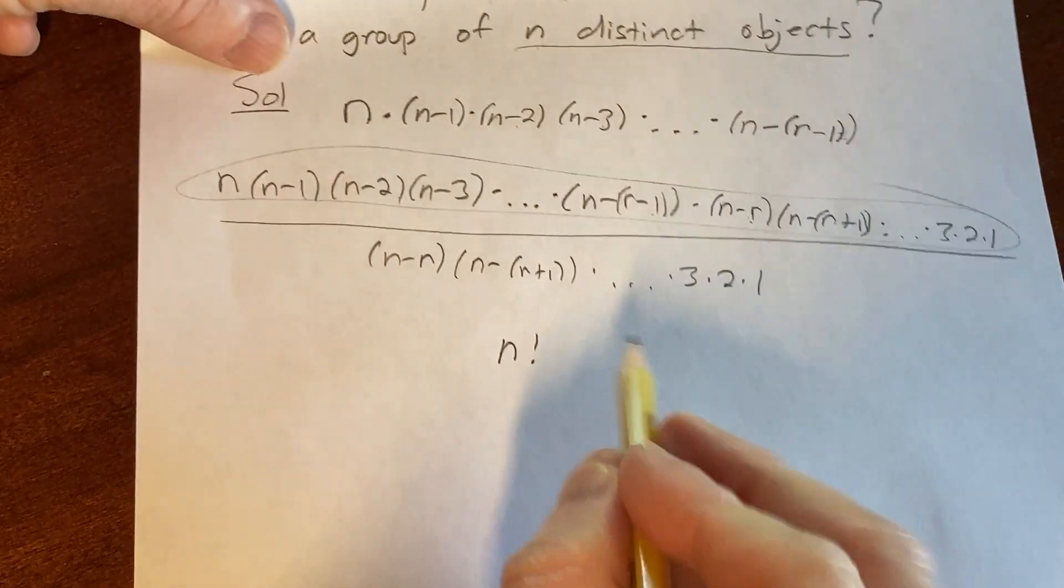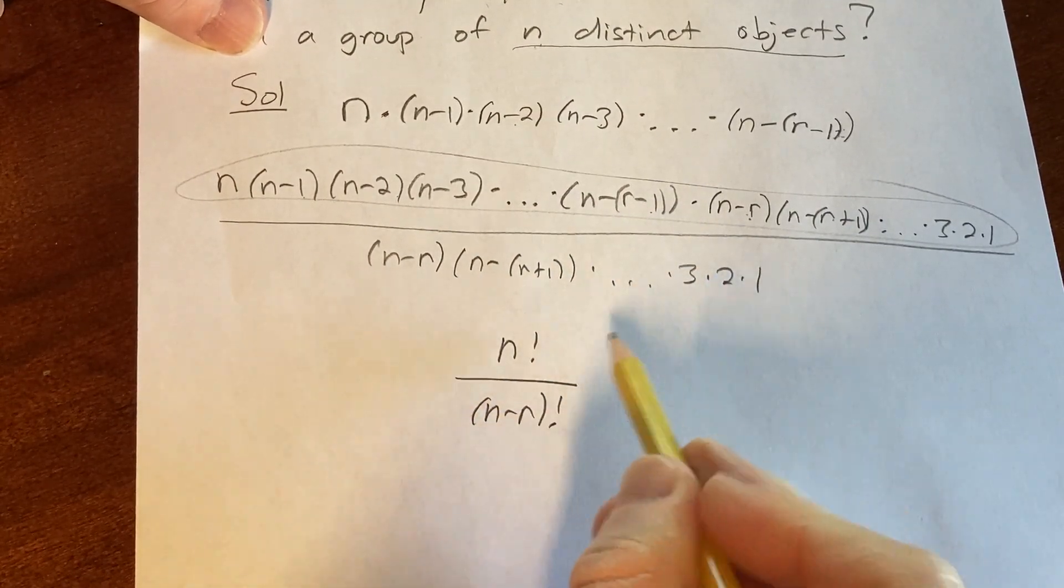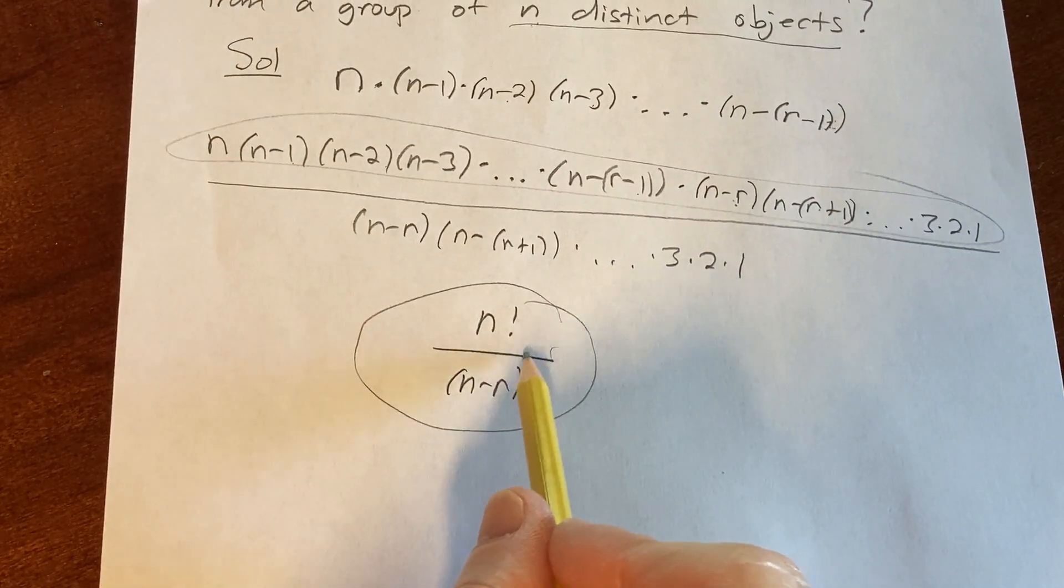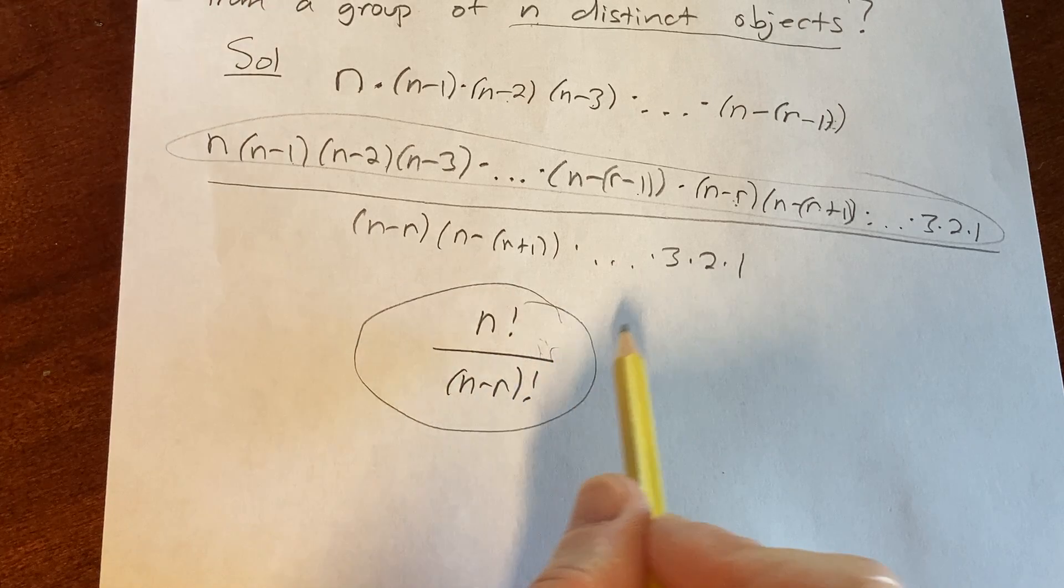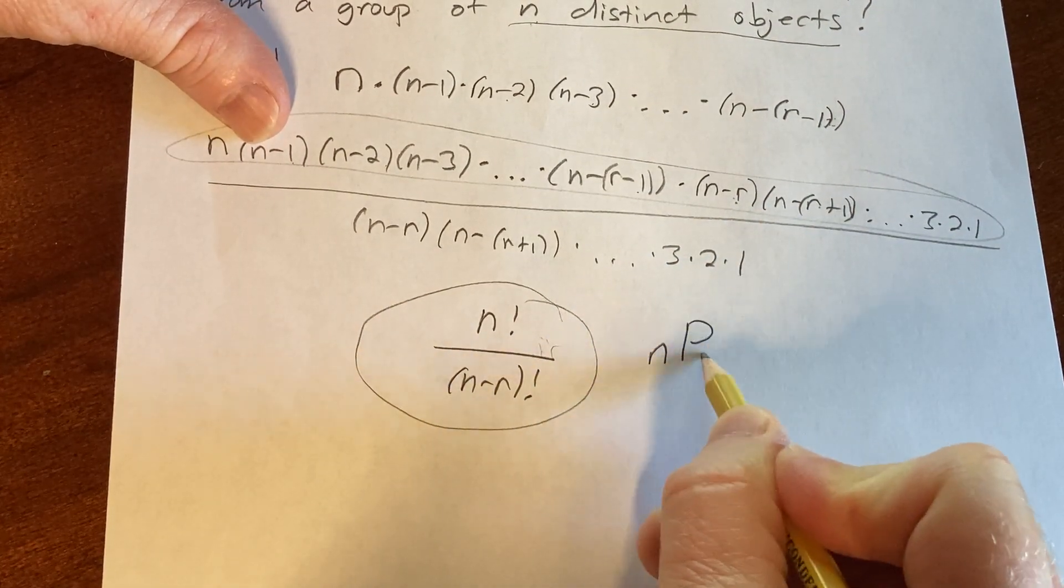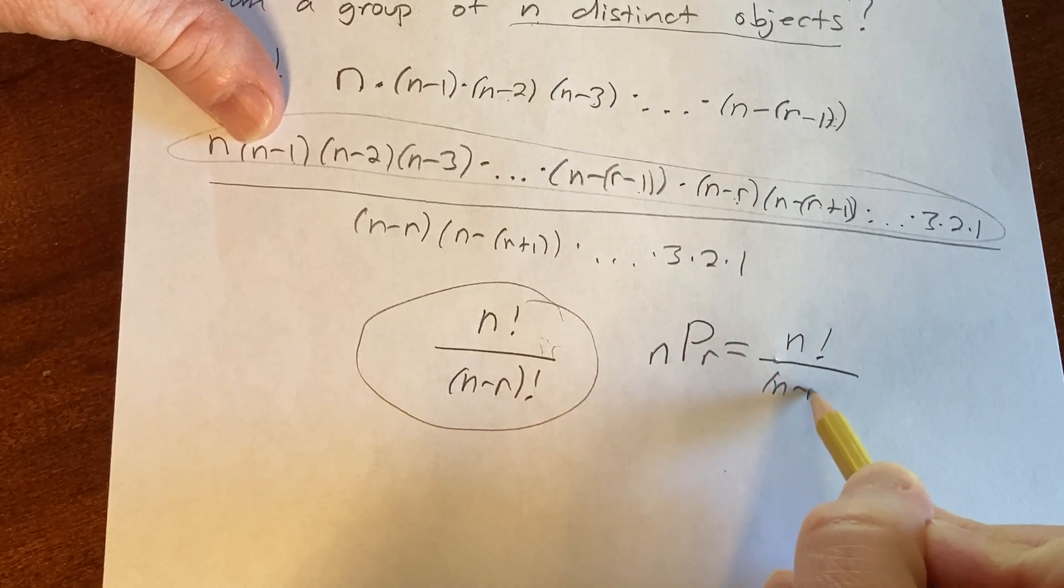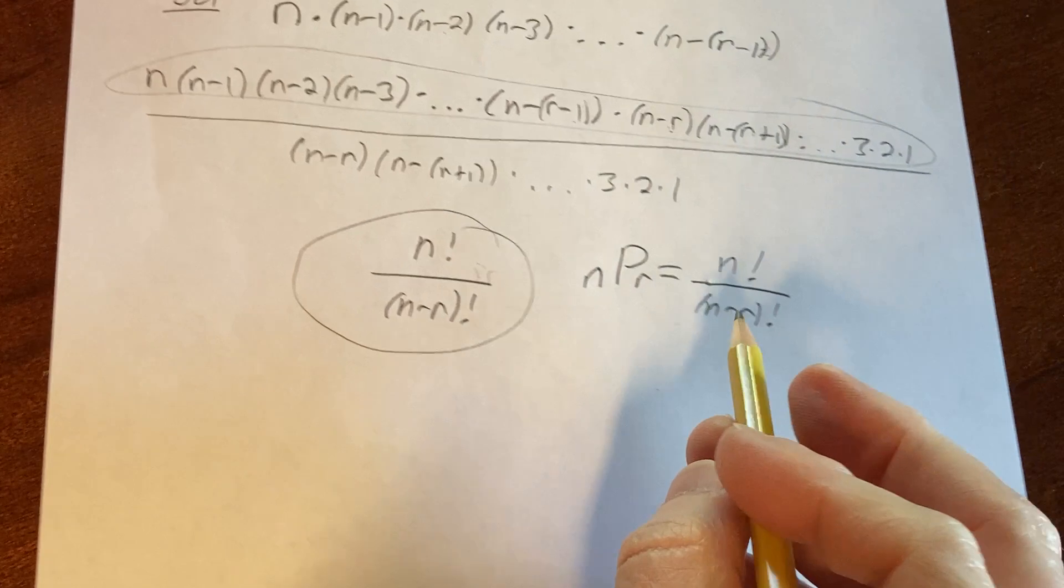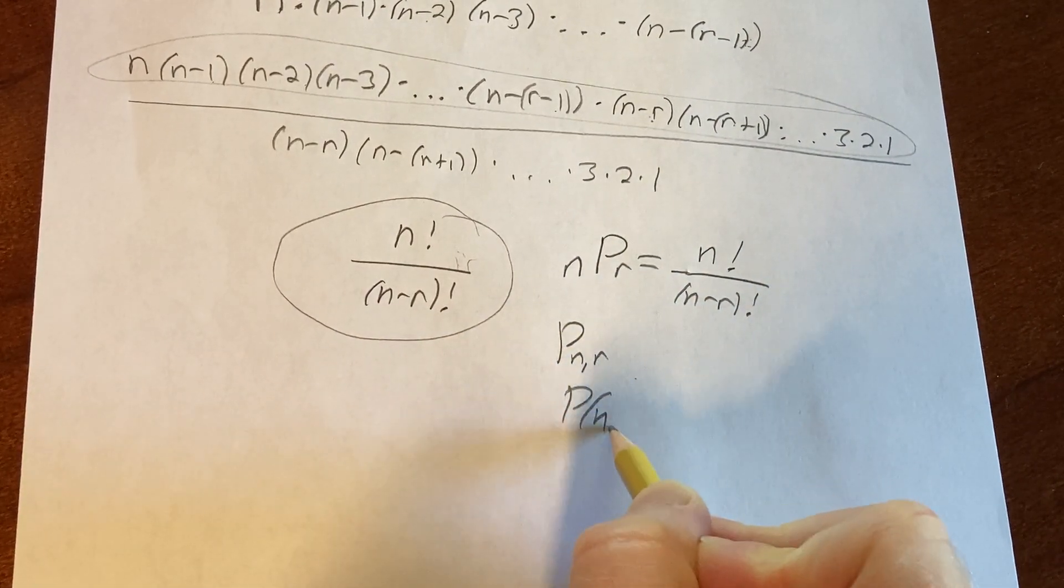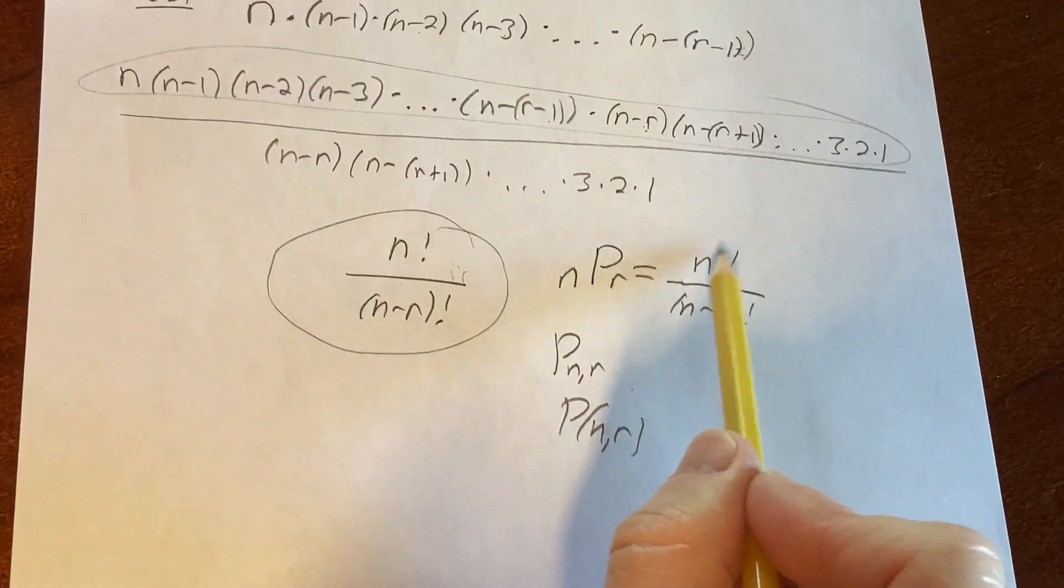And then down here, this is going to be n minus r factorial. And this is that famous formula for the number of ways to arrange r objects from a group of n distinct objects. There's different notations for this. Some people write n P r equals n factorial over n minus r factorial. Also you can see something like P n r or P n r. These are all notations that people often use to denote this expression.